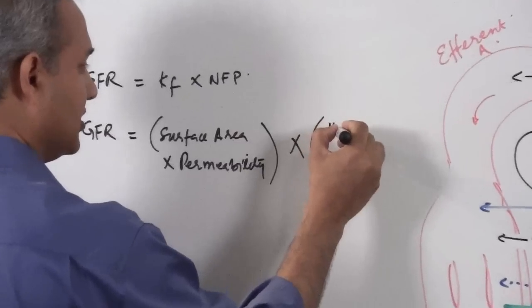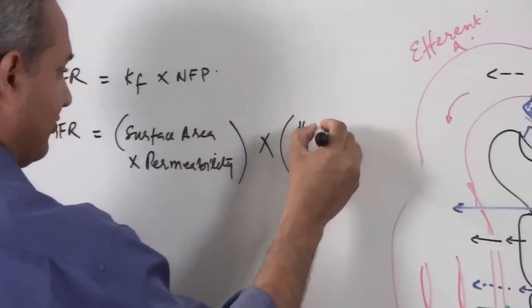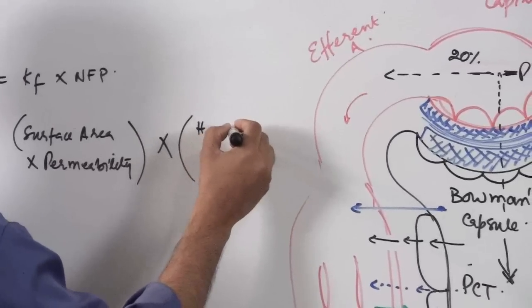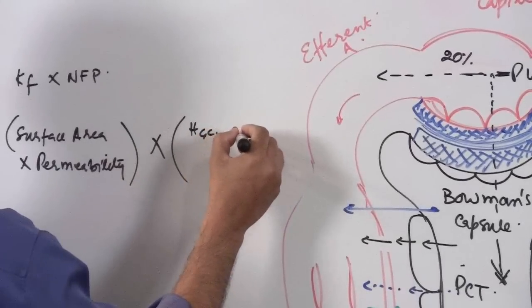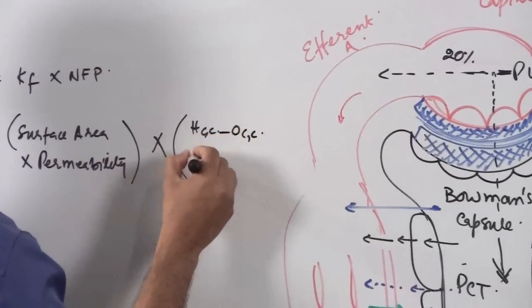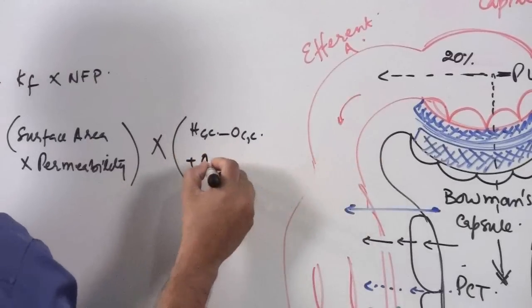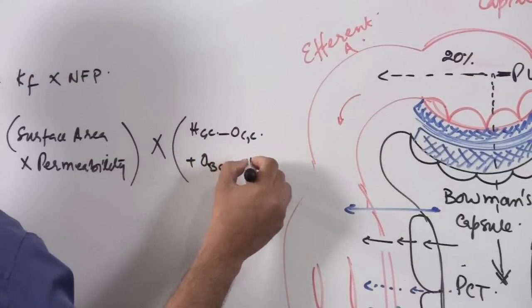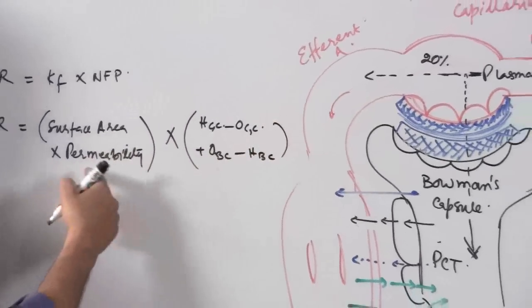Hydrostatic pressure in the glomerular capillary, I have not discussed that, I will. Hydrostatic pressure, oncotic pressure, hydrostatic pressure in the glomerular capillary minus oncotic pressure in the glomerular capillaries plus oncotic pressure in the Bowman's space, plus minus the hydrostatic pressure in the Bowman's space.